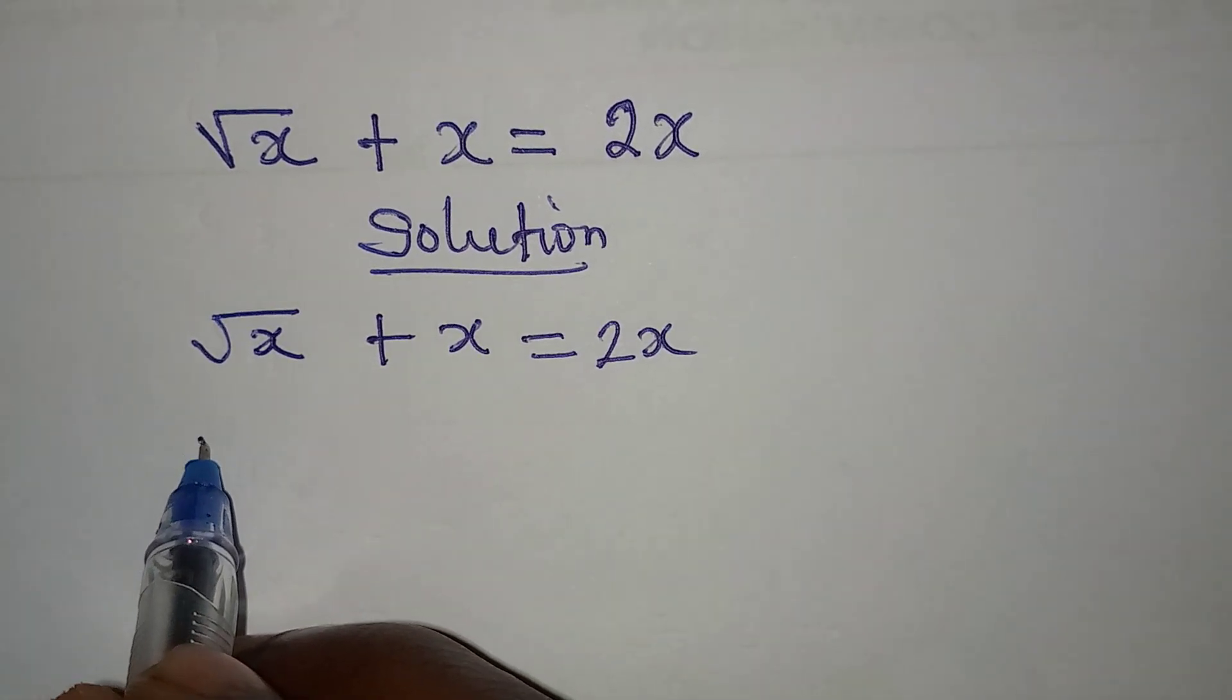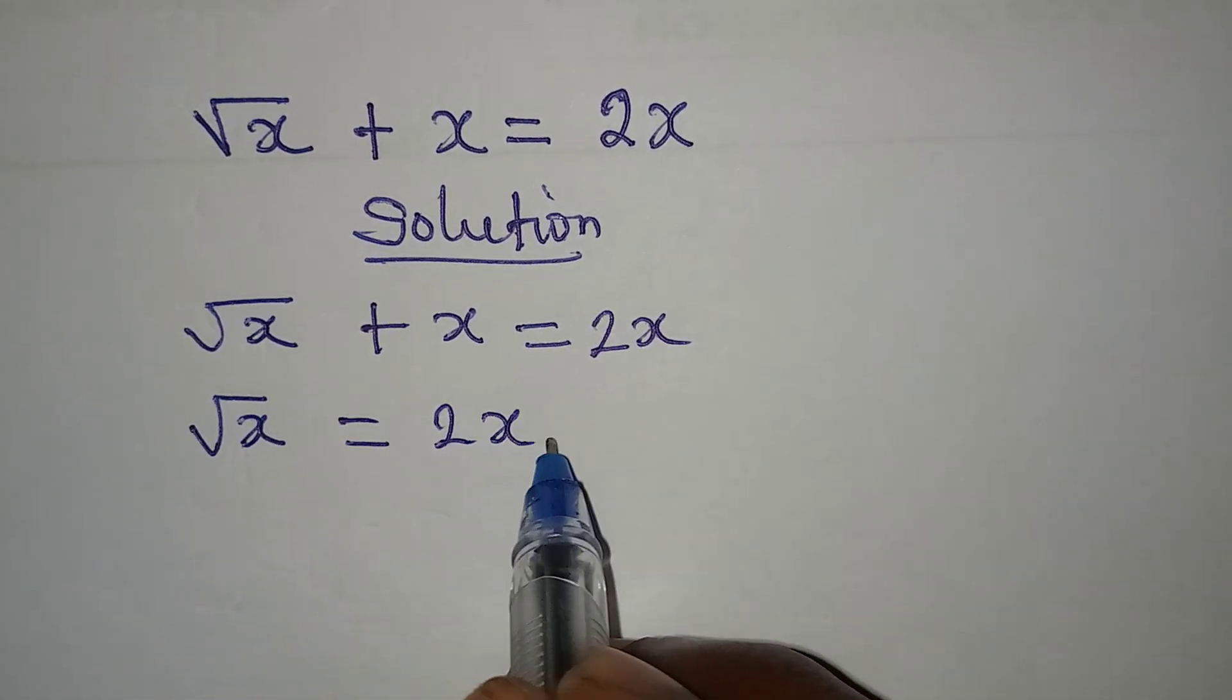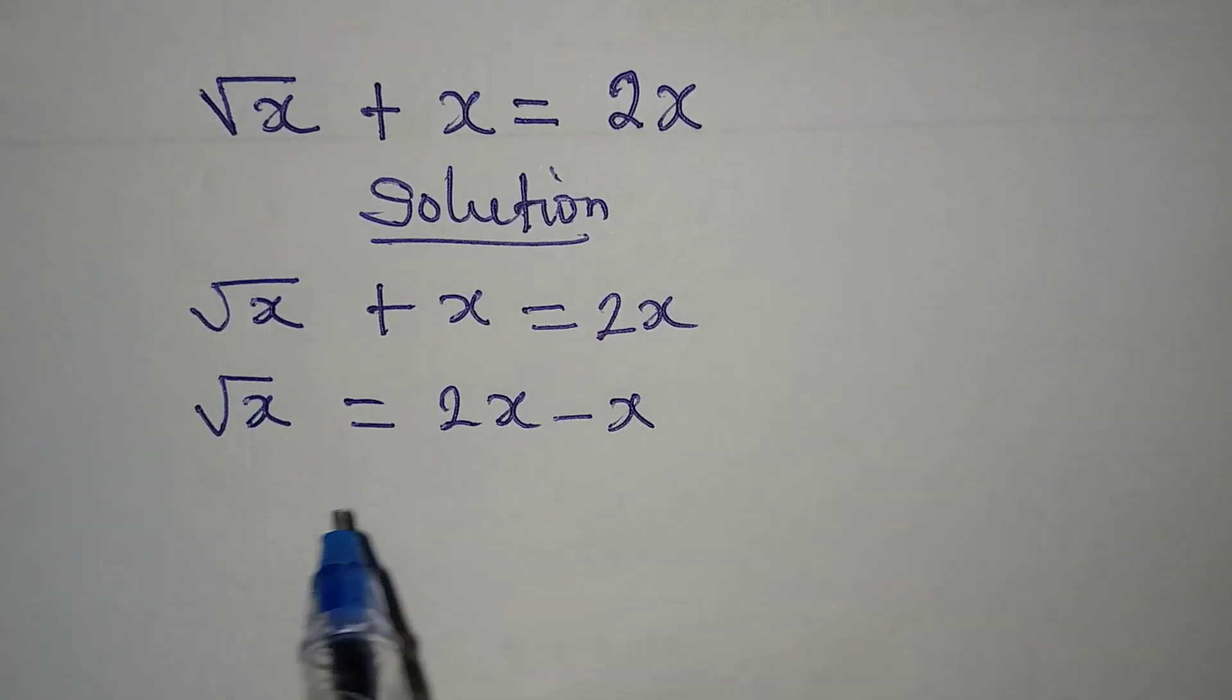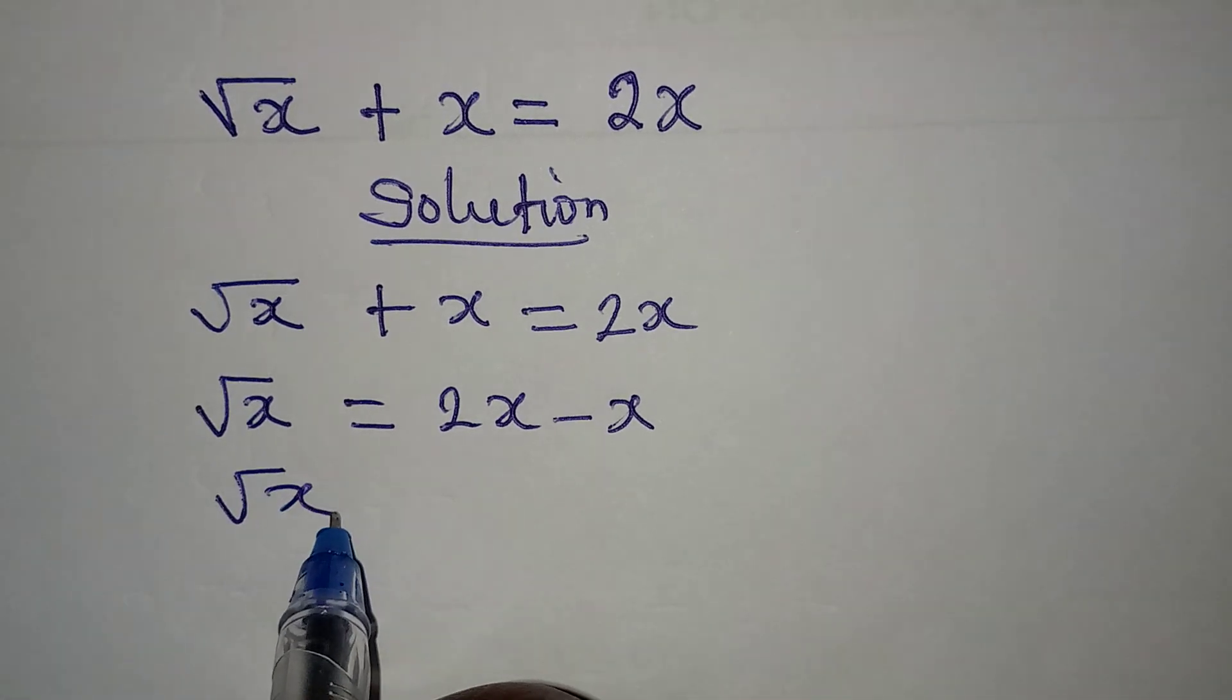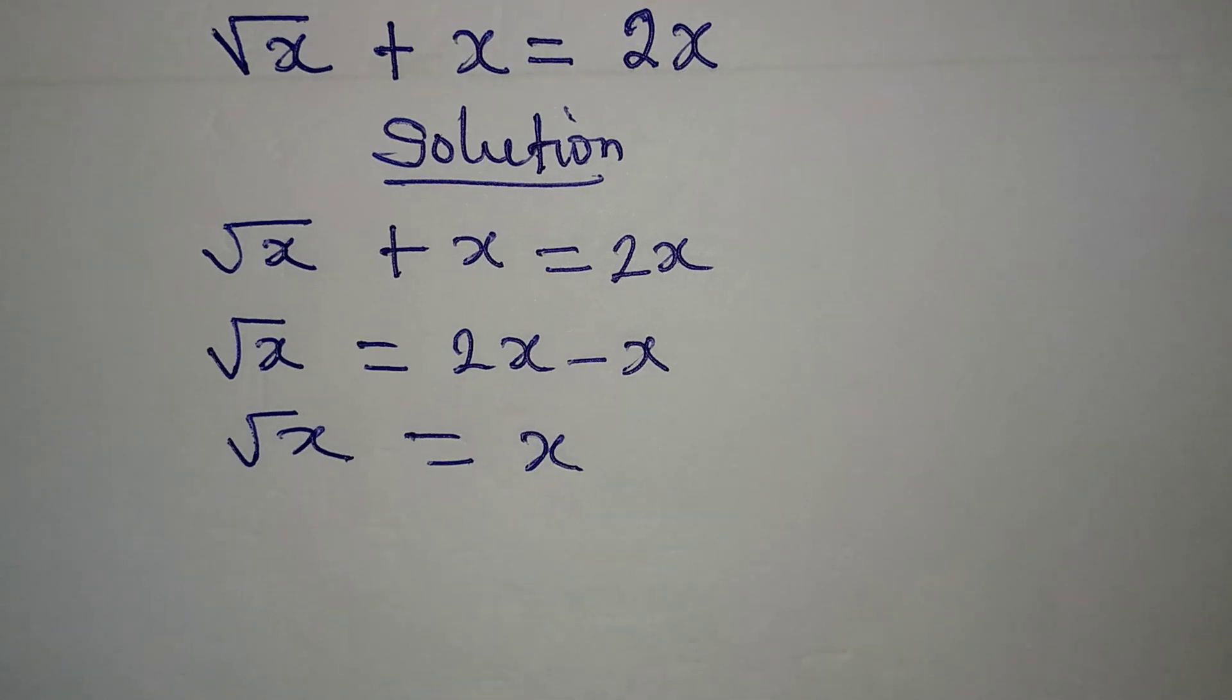This is called collecting like terms, so x will be equal to 2x minus x, meaning that square root of x is equal to x. Okay, so from here you can even tell what the answer should be, but...